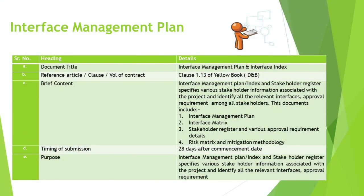Continuing our exploration, we arrive at the Interface Management Plan — an essential tool that orchestrates the complex symphony of project interactions. Referenced in Clause 1.13 of the Yellow Book, the Interface Management Plan, along with the Interface Index and Stakeholder Register, serves as a nexus of project coordination. This document is not just a list; it's a dynamic map that charts the touchpoints between various project entities, laying out the framework for interfacing among the myriad of stakeholders, detailing their roles, expectations, and the intricate web of interdependencies.